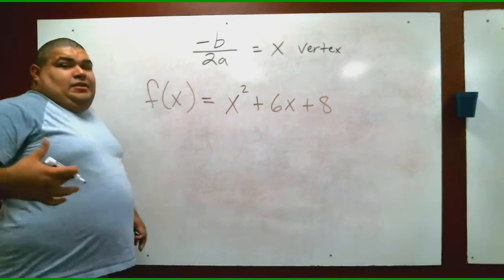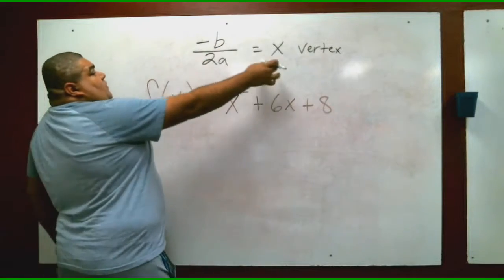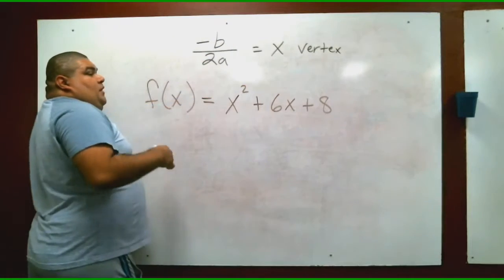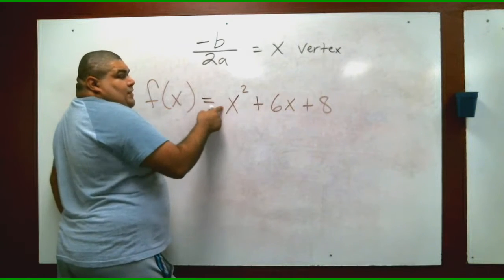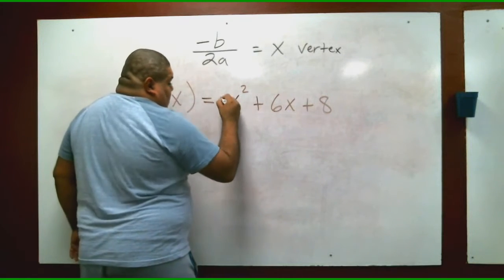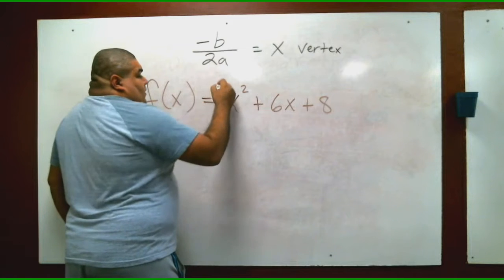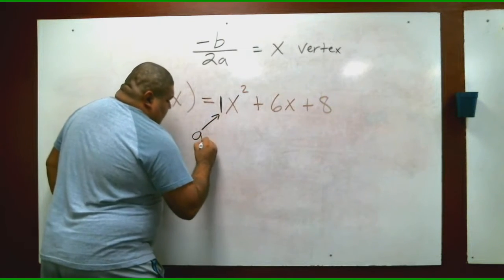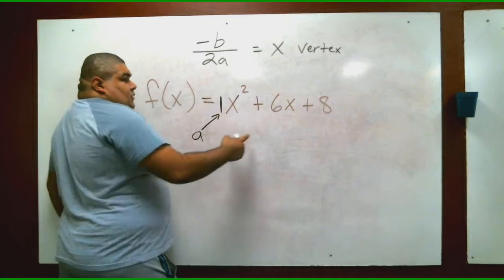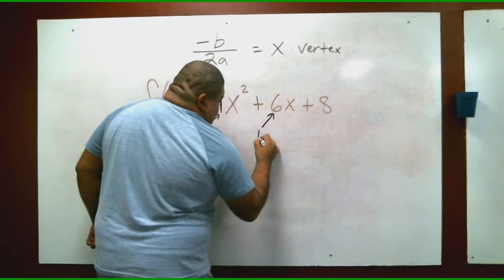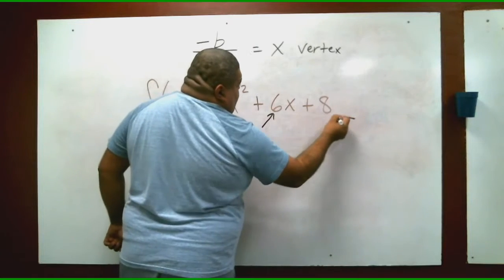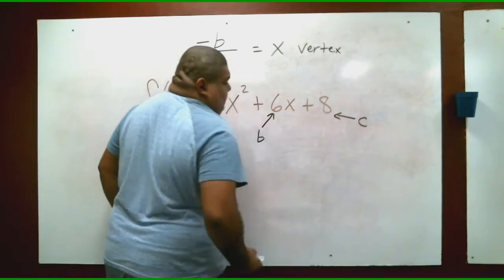Let's start off by doing that little step we have to do to solve for x-vertex. If you guys remember, when there's no number in front of an x, it's a one, right? That one is your a. The six is your b, and the eight is the c.